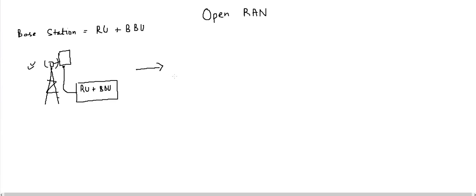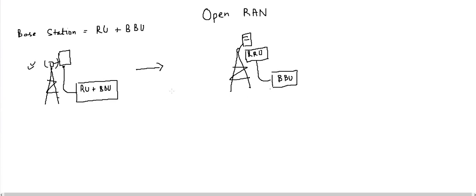Some enhancement has been made and the remote unit is replaced by a remote radio unit, RRU. An RRU is introduced in the base station, and this RRU is connected to the BBU, which is further connected to your core network. In case of 2G it would be MSC, and in case of 4G it will be your MME and SGW.